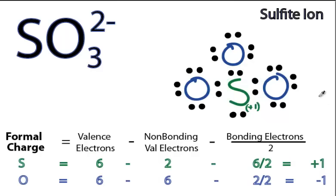For the oxygens, and they're all the same, so we'll just do 1 on the periodic table. 6 valence electrons. Non-bonding. We have 6 non-bonding for each of the oxygens. And then 2 bonding. 6 minus 6 minus 1 gives us minus 1 for each of the oxygens.